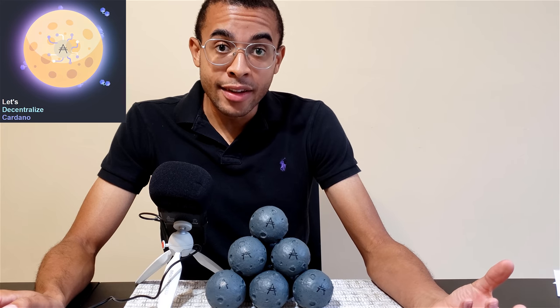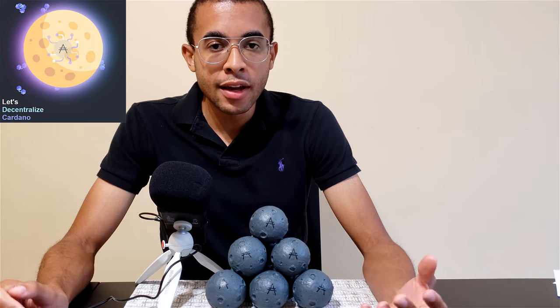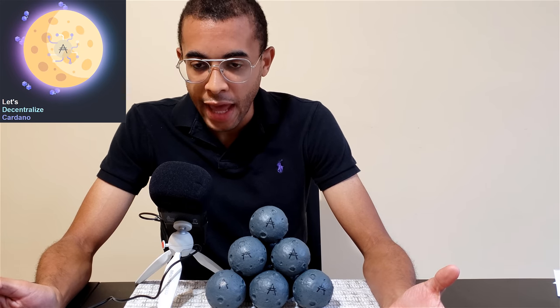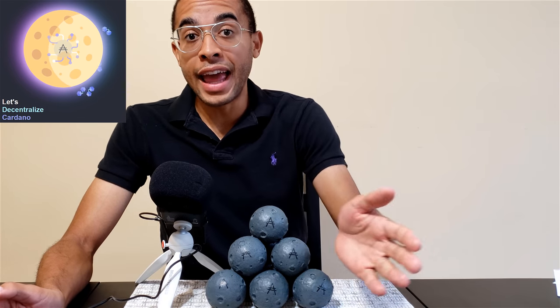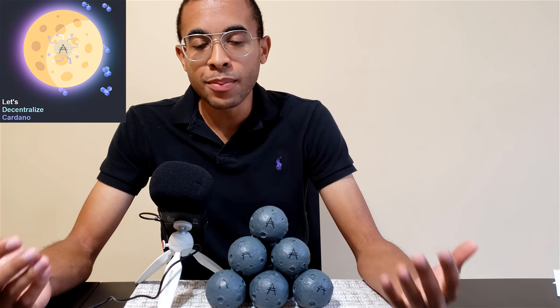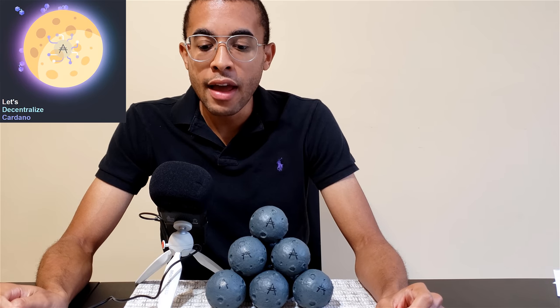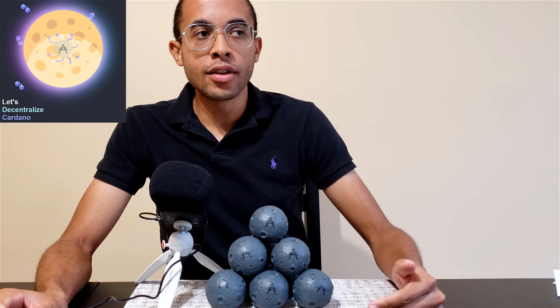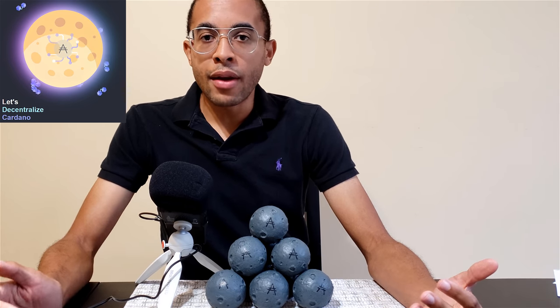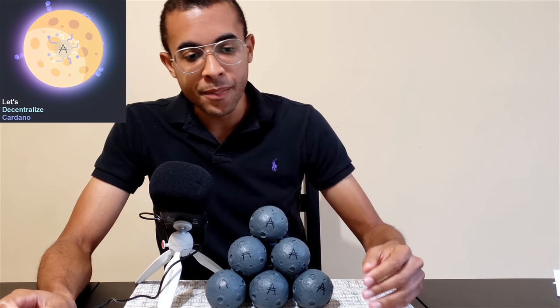We also need to talk about Sybil attacks - preventing these low-cost solutions or low-cost pools from spinning up so many pools that they control 51% of the ADA. You want to set the k value low enough and the a zero factor high enough to incentivize people to pledge large amounts, ultimately making the cost of a 51% attack very expensive. If we raise the k value to 1000, 2000, or 5000, that decreases the barrier to entry and increases the chances of a Sybil attack.